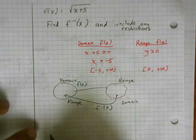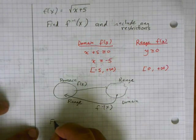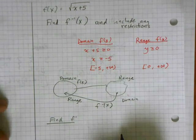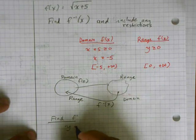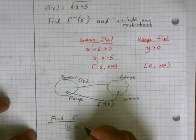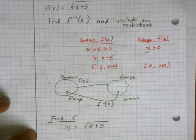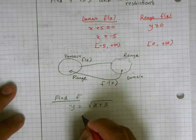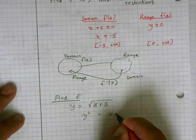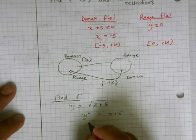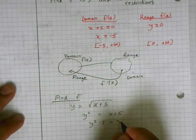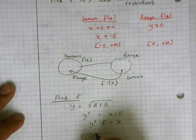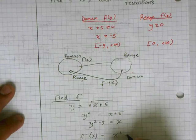Now let's actually find f inverse. I start out with the function, set y equal to the original function: y equals square root of x plus 5. Then I solve for x — I square both sides to get y squared equals x plus 5, then subtract 5 from both sides to get y squared minus 5 equals x. So my inverse function, f inverse of x, is equal to x squared minus 5.